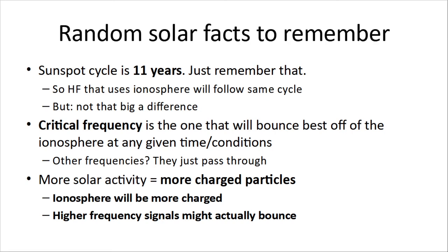There's a critical frequency — the one that will bounce best off the ionosphere for the given time and conditions. Other frequencies might just pass through. More solar activity generates more charged particles, so the ionosphere will be more charged, and higher-frequency signals than what would normally bounce might also bounce as well.